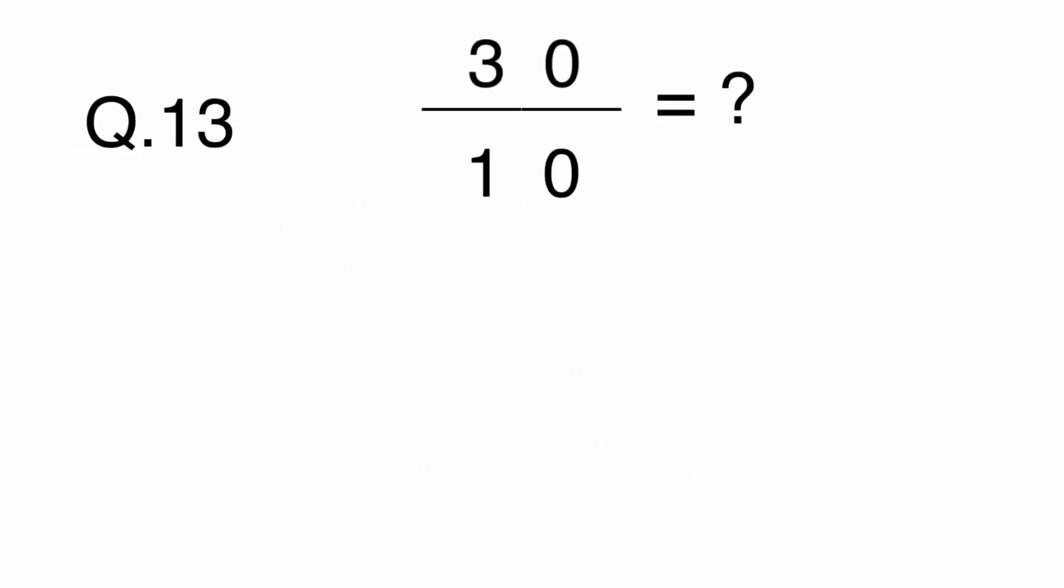Question 13: 30 tenths equals A: 3, B: 15, C: 20, or D: 40?